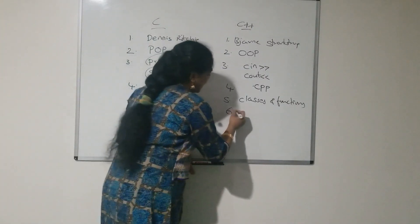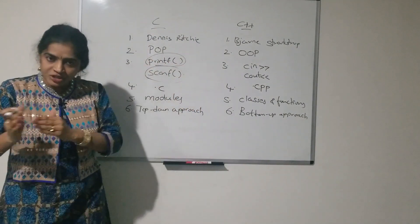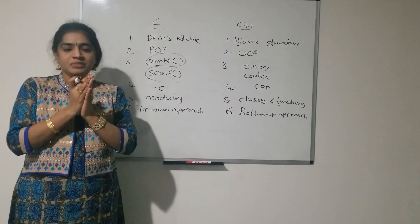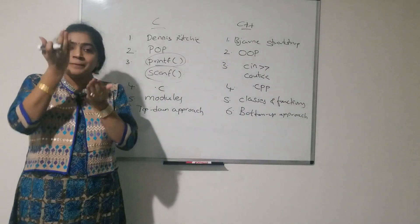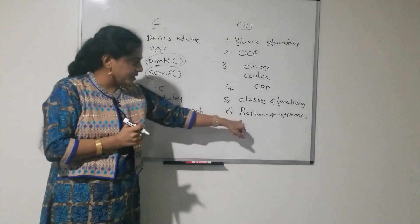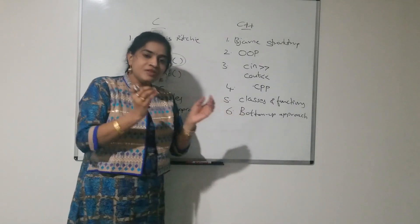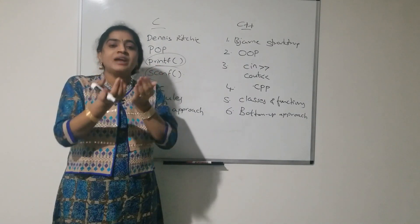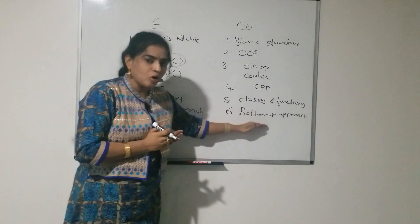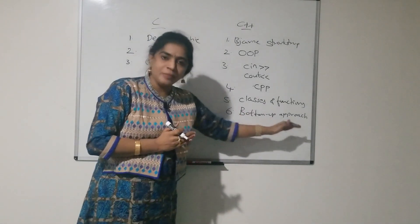C++ follows a bottom-up approach. Here in C++ we define the main function at the bottom. We solve all the small problems and integrate them to complete the solution — that is the bottom-up approach. Here composition takes place, whereas in top-down approach decomposition takes place. In bottom-up, we solve all the small problems, integrate them, and complete the solution. In C the main function is written at the top, in C++ the main function is written at the bottom.